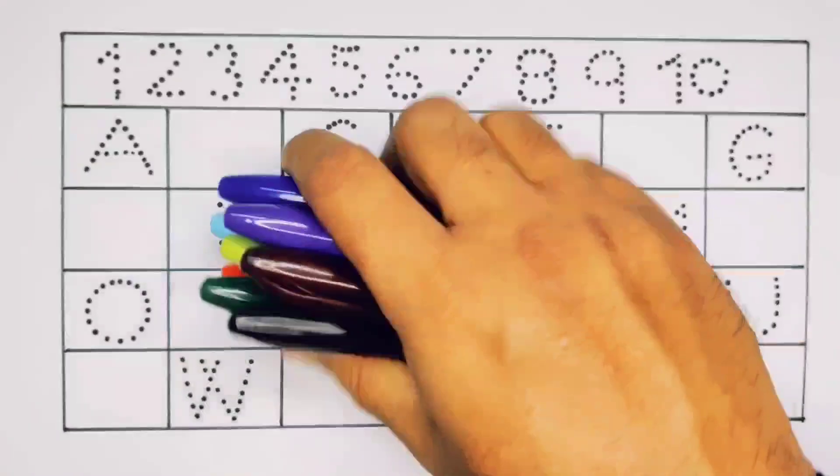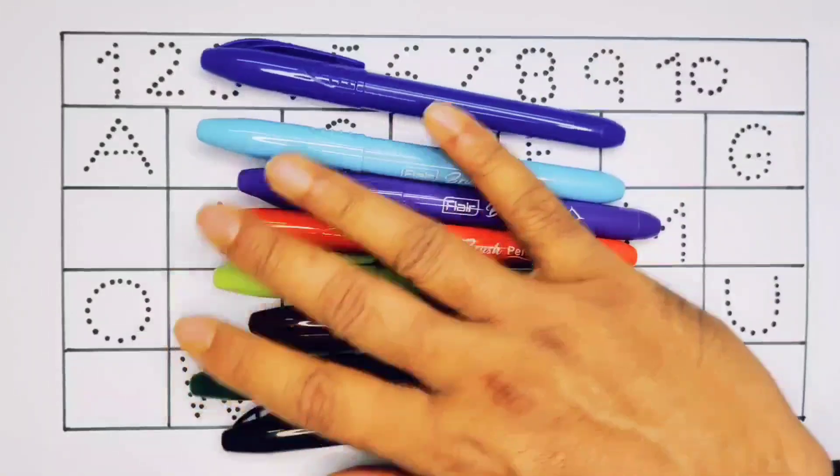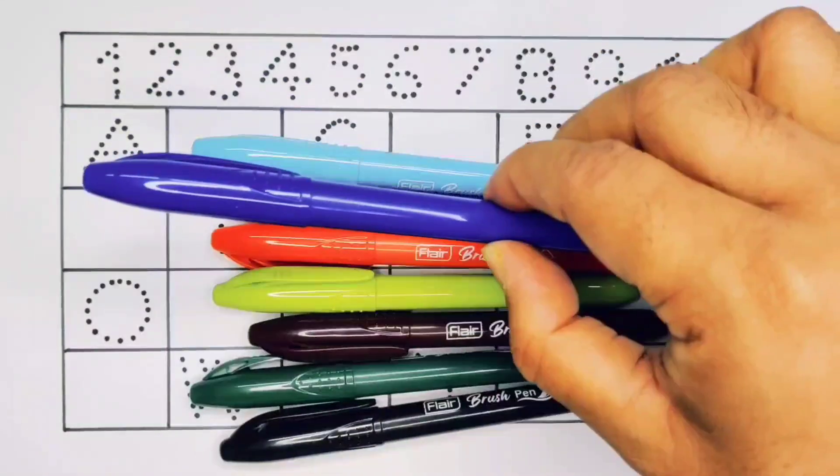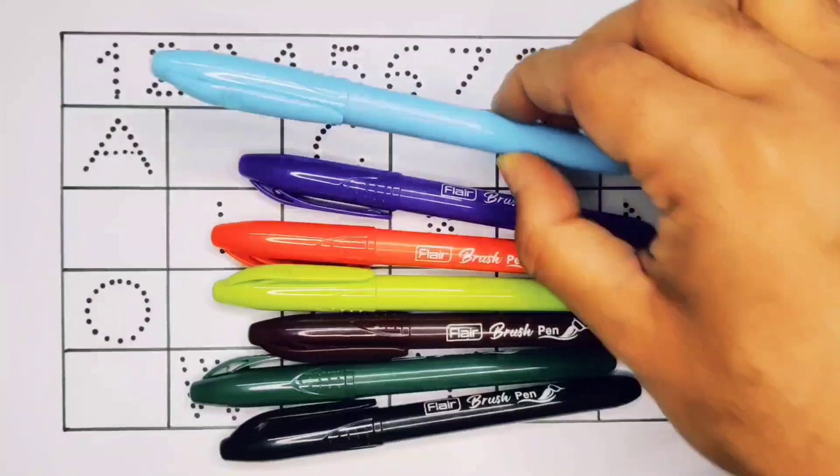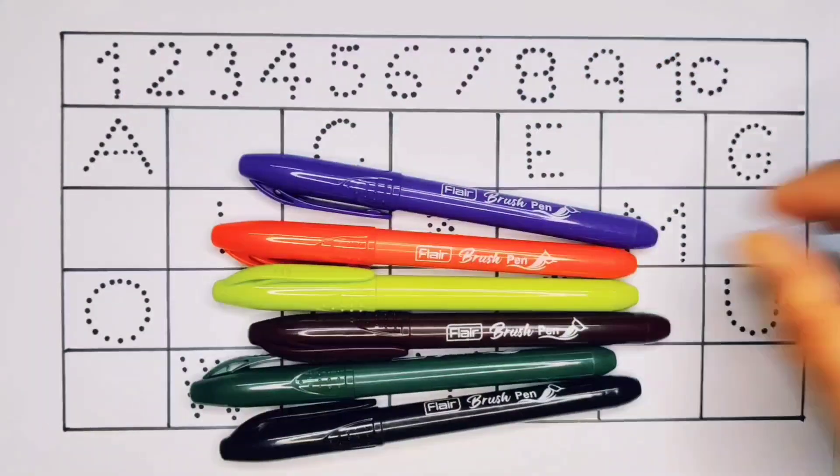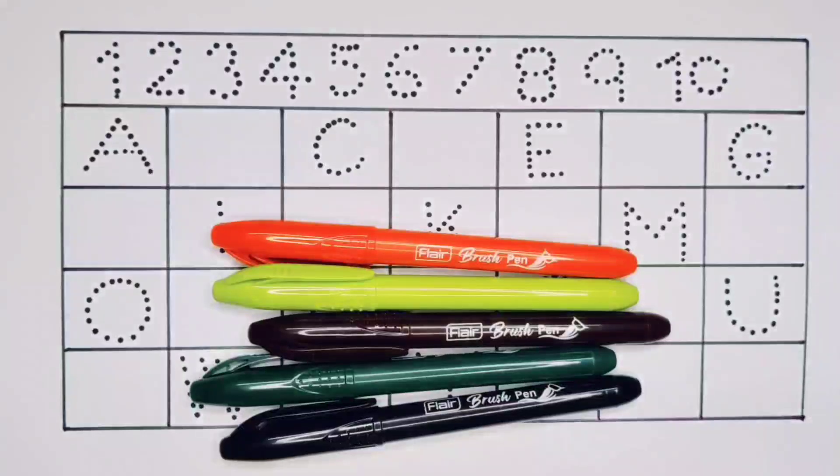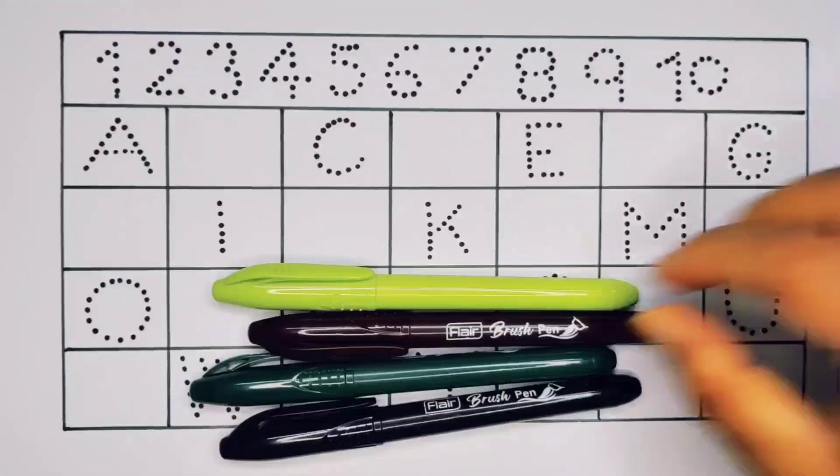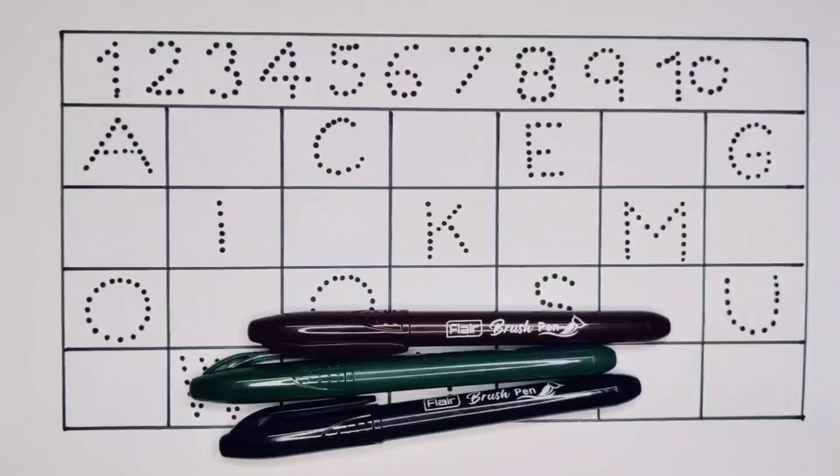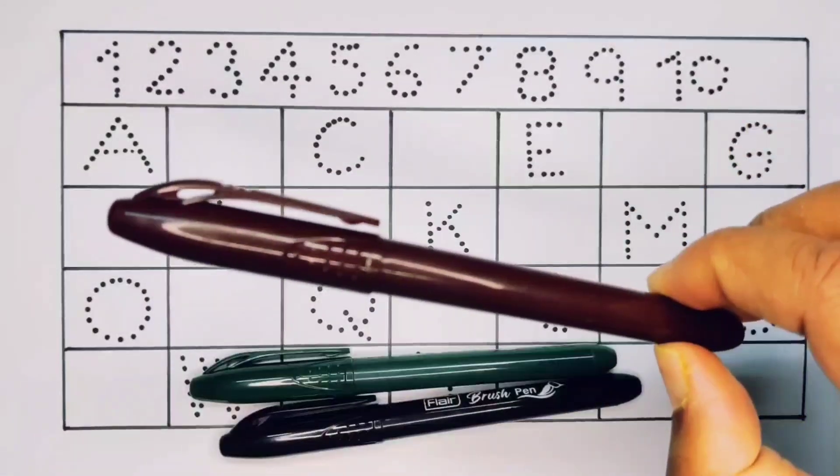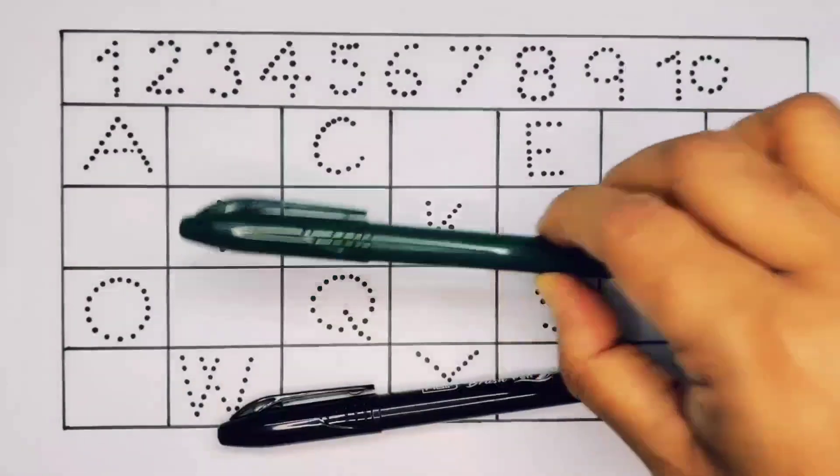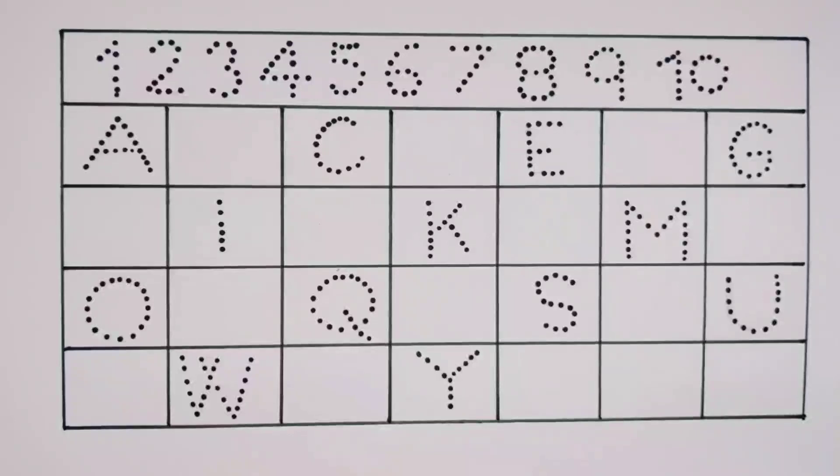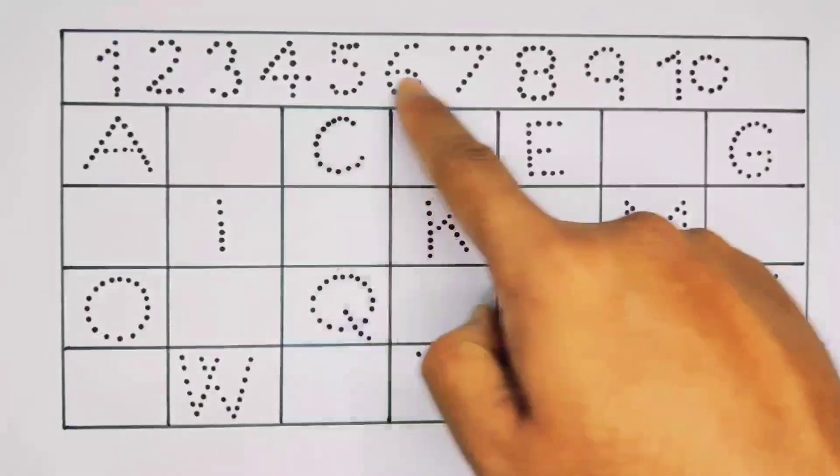Hello kids, welcome to my channel. First we are going to learn the colors: blue color, sky blue color, purple color, orange color, light green color, chocolate color, green color, and black color. Now let's learn the counting numbers one to ten and the alphabet.